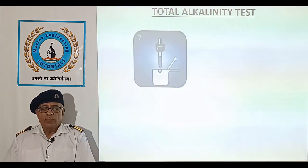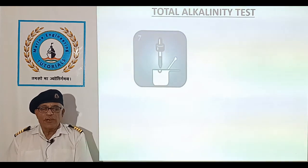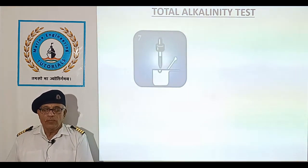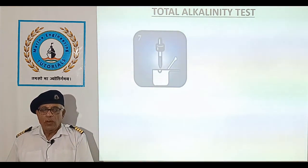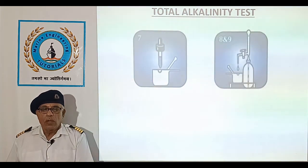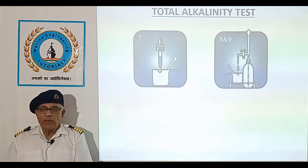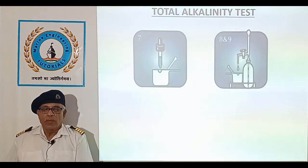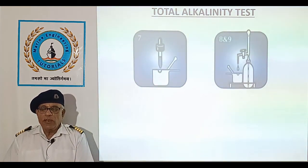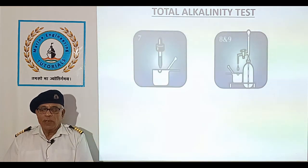Add 3 drops of total alkalinity indicator. Continue the titration and note the final level of acid in the burette. Convert millilitres of sulfuric acid used as per the previous table and record the result in ppm as total alkalinity.